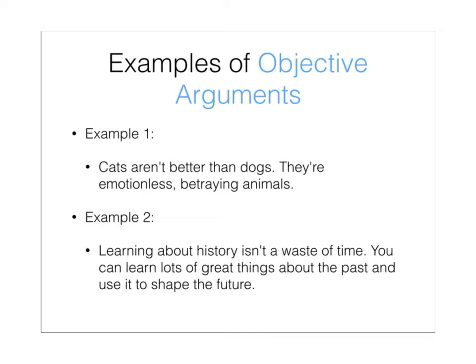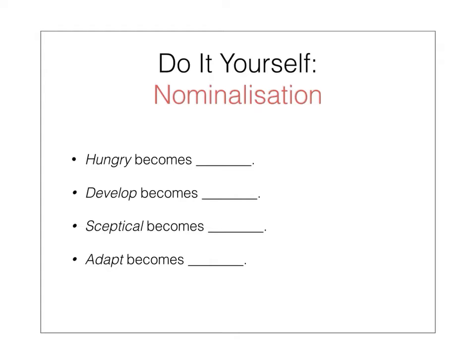Examples of subjective arguments. Example 1: 'Cats aren't better than dogs. They're emotionless, betraying animals.' Example 2: 'Learning about history isn't a waste of time. You can learn lots of great things about the past and use it to shape the future.'